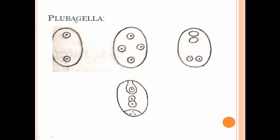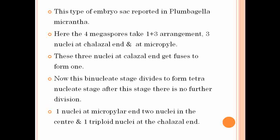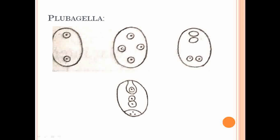The Plumbagella type is a 4-nucleated embryo sac. The three nuclei at the chalazal end fuse to form one, making it binucleate again, and then further nuclear division forms the tetranucleate stage, which arranges the embryo sac.